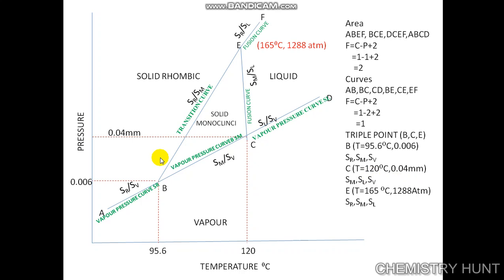The third triple point is E, where the temperature is 165 degrees Celsius and the pressure is 1,288 atmospheres. At this point, sulphur rhombic is in equilibrium with sulphur monoclinic, which is in equilibrium with sulphur liquid. Calculating the degree of freedom: F = C minus P plus 2, with component 1 and phases 3, gives F = 0. This is an invariant system — both temperature and pressure are fixed, and if either is disturbed, one phase will disappear.